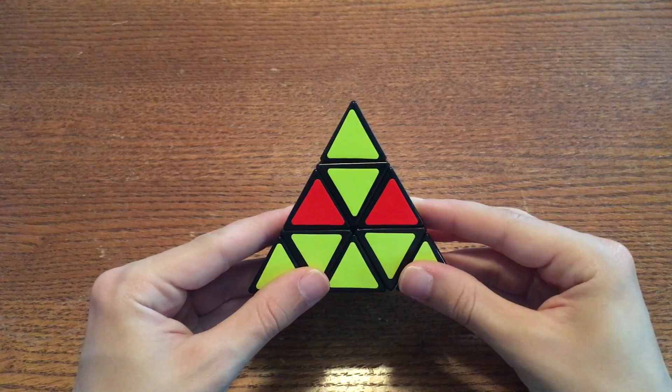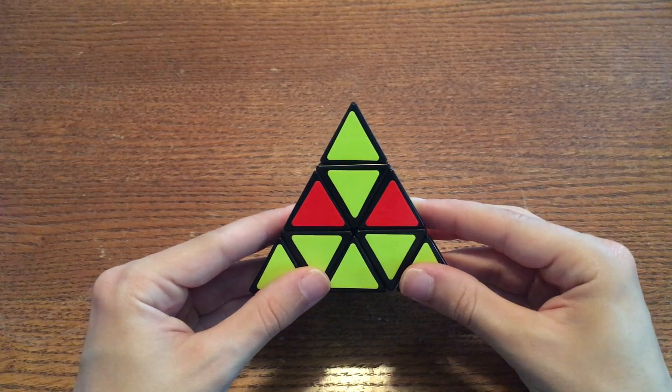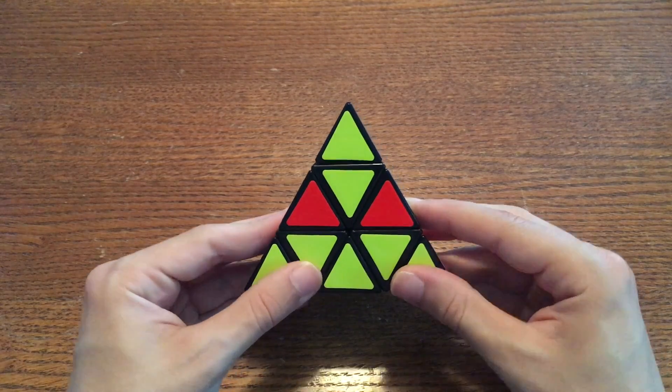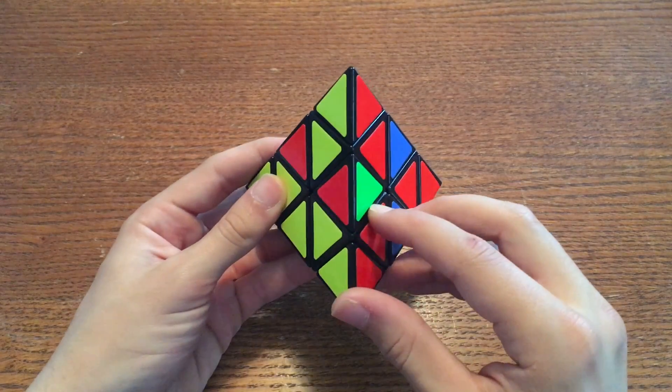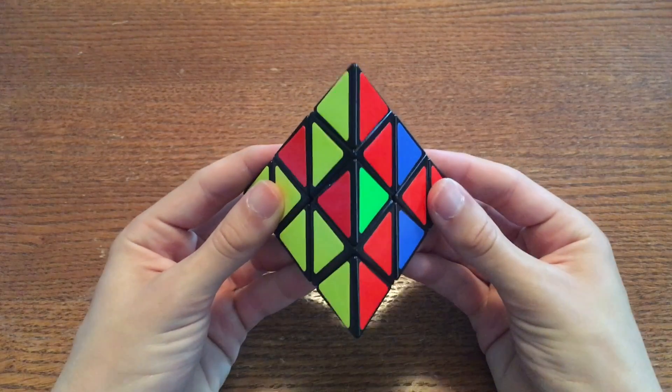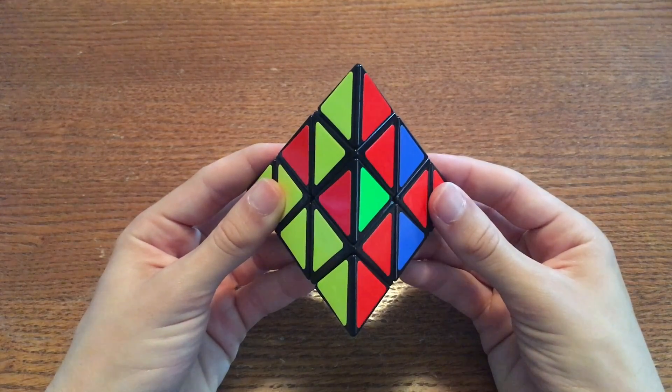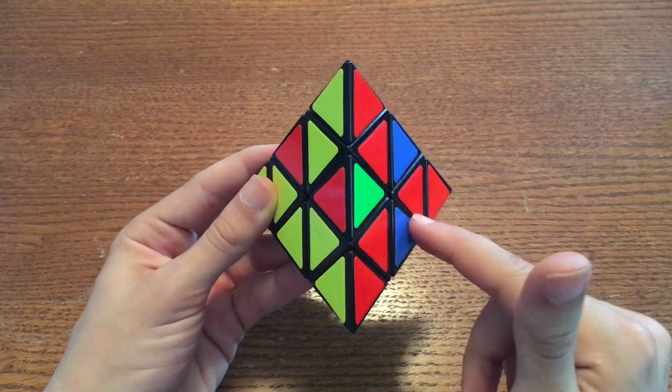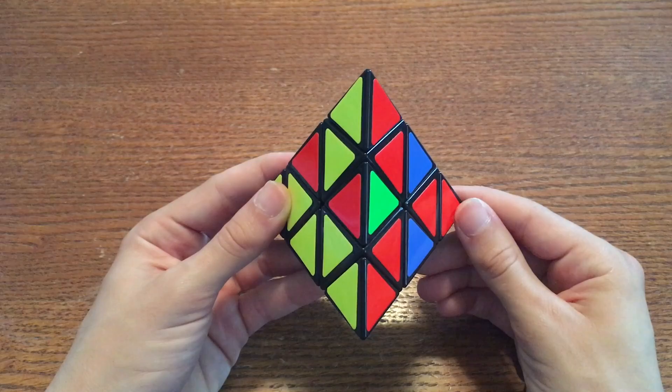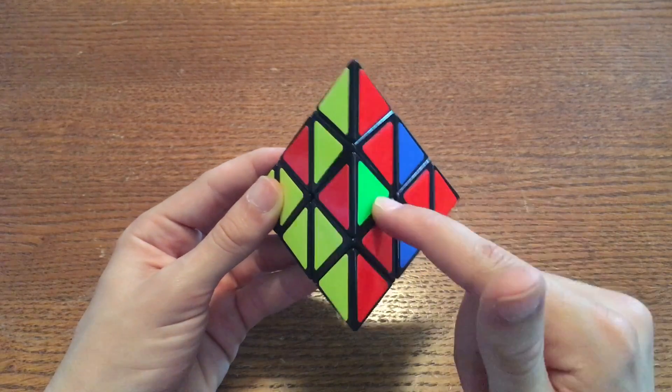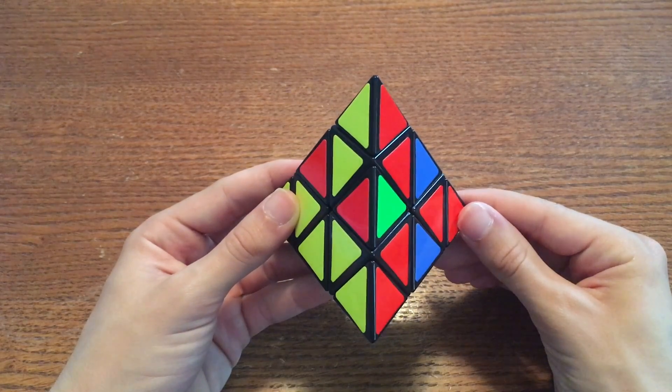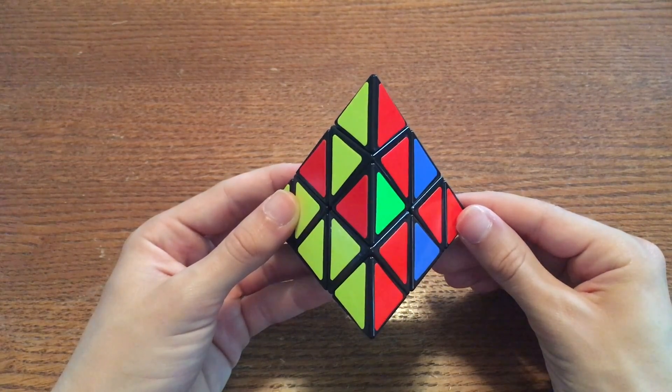Start by picking an edge like we just showed, where it's not in the correct place but exactly one of the colors matches. Here's one. This is the red green edge. Now face this edge straight on like this so you can see the other four edges that it is just barely touching. Those are the four destinations where we can move this edge using our algorithm. We need to find which one of those destinations is the red green destination.